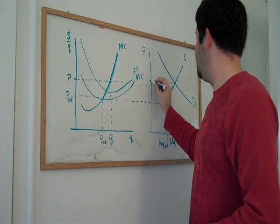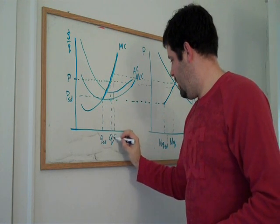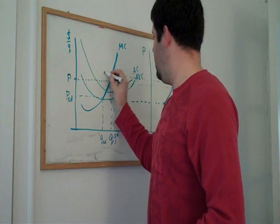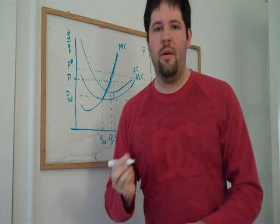Then we get the price, the equilibrium price and quantity. Each firm will provide little q star, and p star will be our equilibrium price.